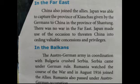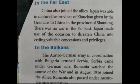War in the Far East: China also joined the Allies. Japan captured the province of Kiaochow, which was given to China by Germany in the Shandong province. There was no real war in the Far East. Japan threatened China and received valuable concessions and privileges.